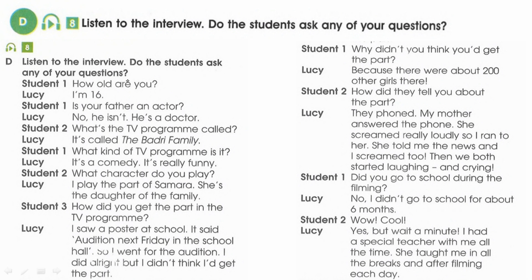Listen to the interview and check if the students ask any of your questions. The interview goes: 'How old are you?' — 'I am 16.' 'Is your father an actor?' — 'No, he isn't, he's a doctor.' 'What's the TV program called?' — 'It is called The Badri Family.' 'What kind of TV program is it?' — 'It is a comedy, it's really funny.' 'What character do you play?' — 'I play the part of Samara, she's the daughter of the family.'